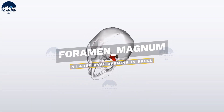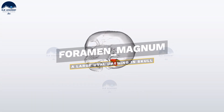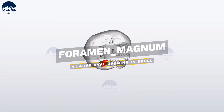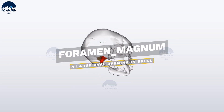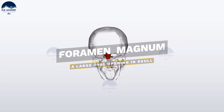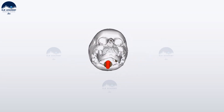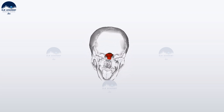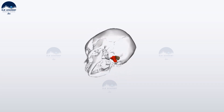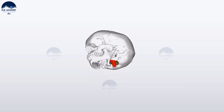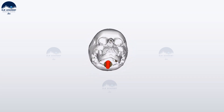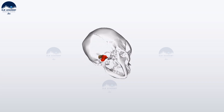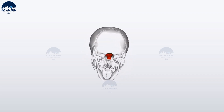Foramen magnum. It is a large opening in the occipital bone of the skull. The spinal cord and extension of the medulla oblongata passes through this hole as it exits the cranial cavity.